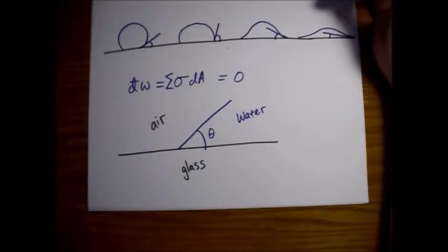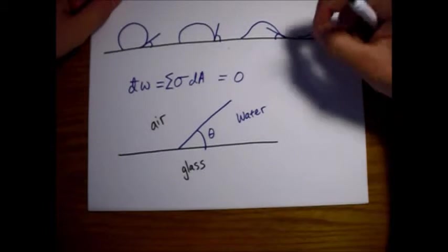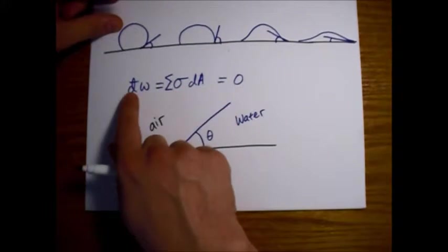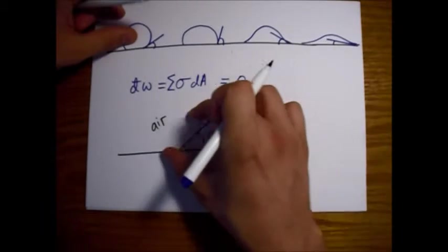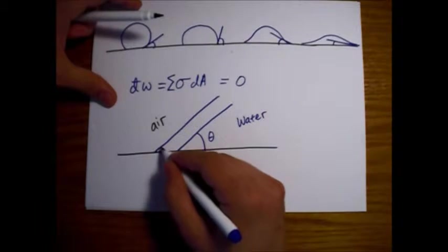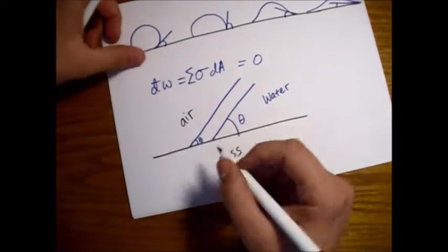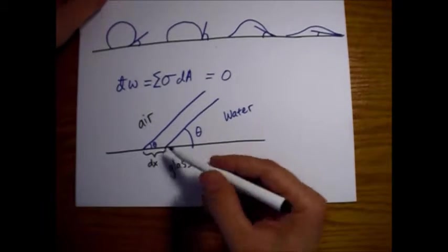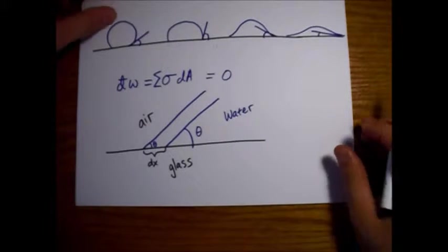So, what we need to do is just find some sort of infinitesimal change that will let us compare these different pieces. Meaning these different pieces of our total work. So, the way we're going to do that is imagine this water advances slightly so that it's now at the same angle. Right? This is still theta. But it has moved a slight amount, which we will call dx.